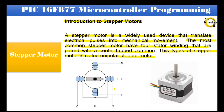As you can see in the following diagram, the stepper motor has four stator windings that are paired with a center-tapped common. This is the common point, and it has a permanent magnet rotor. Here is a picture of the stepper motor.